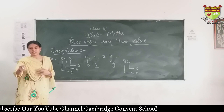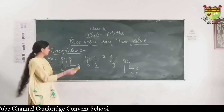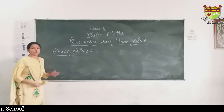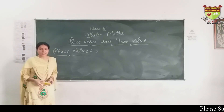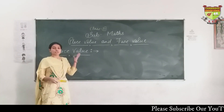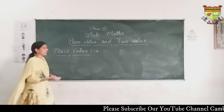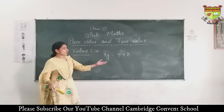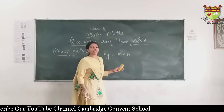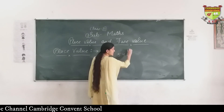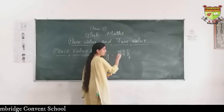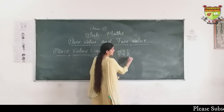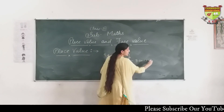Now, place value. Place value is the value of a digit according to its place or position in the number. Its value depends on its place or position. Let us see an example with 548. We read a number starting from the extreme right side. This place is 1's, this is 10's, and this is 100's. The place value of 8: 8 is in the 1's place, so the place value of 8 is 8.